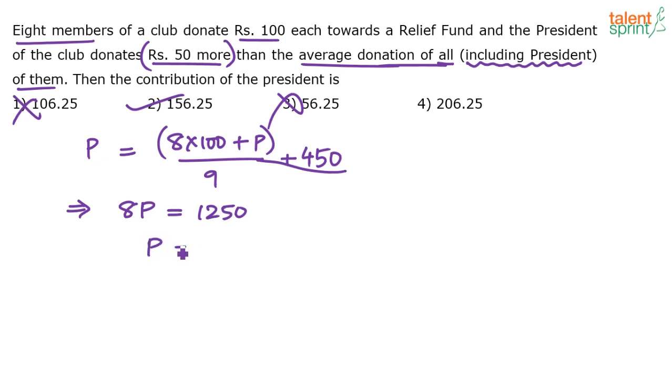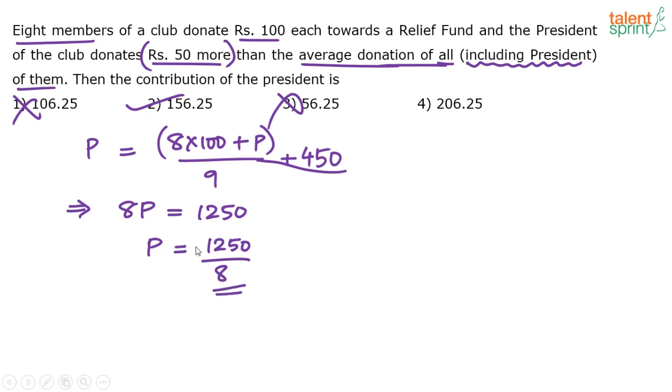1250 divided by 8 equals 156.25. That's your answer. So 156.25 — option 2 is the answer.